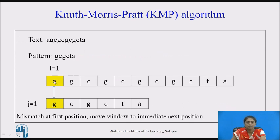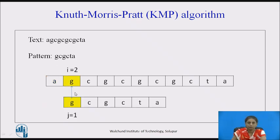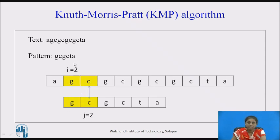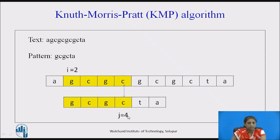Consider the example with the text and pattern. I is the text pointer and J is the pattern pointer. The first character mismatches, so we move the window to the next position. At position 2 in the text, the first character of the pattern matches, so J becomes 2, then 3, then 4. At J=5 there is a mismatch — four characters are matched and mismatch is at position 5.